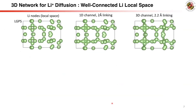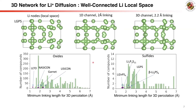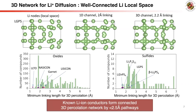A good ion conductor should also have a good diffusion network. We quantify the network by the shortest distance that can connect lithium sites to form percolation. In all known superionic conductors, we find local lithium nodes have a short connection distance of less than 2.5 Ångström, suggesting a well-connected network with a short diffusion pathway.